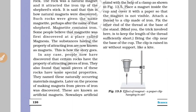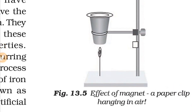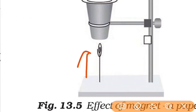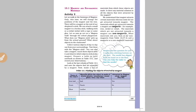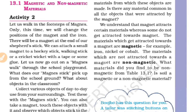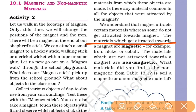Next, there is a small experiment. Magnetic and non-magnetic materials — these are the important matters. The material that is attracted towards a magnet is called a magnetic material. The other material that is not attracted towards the magnet is called a non-magnetic material.